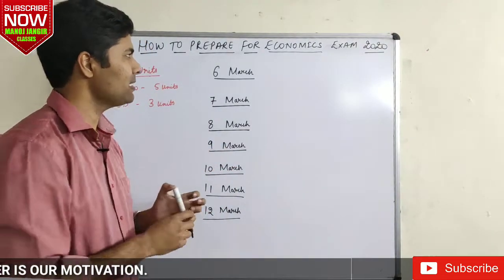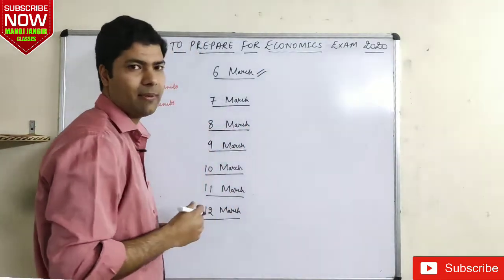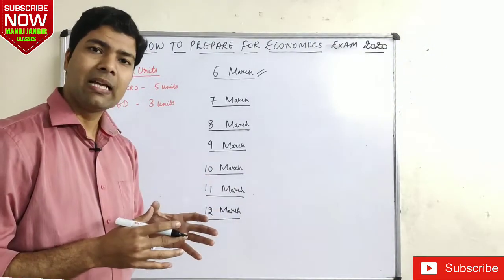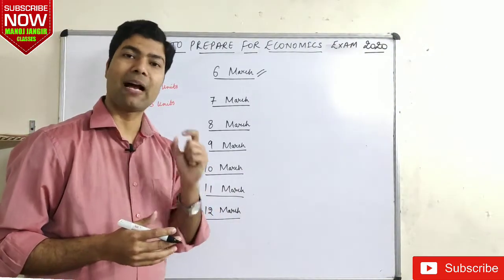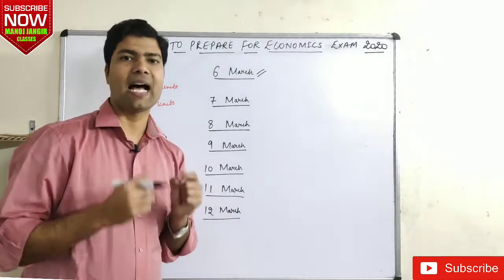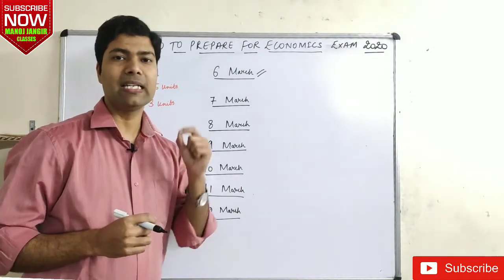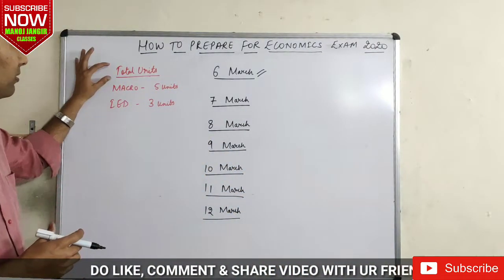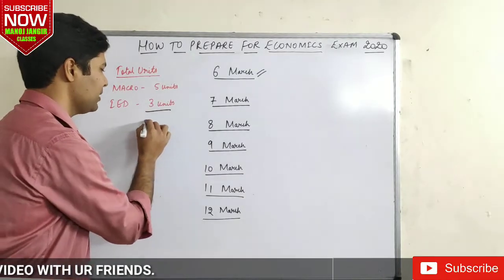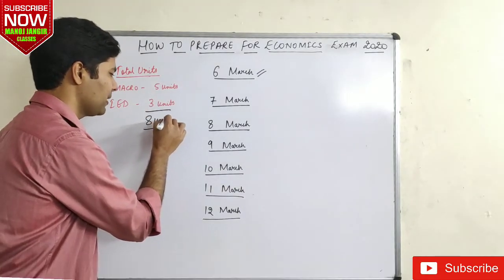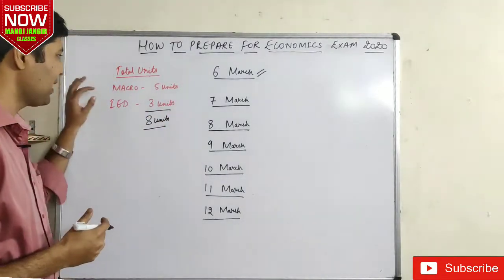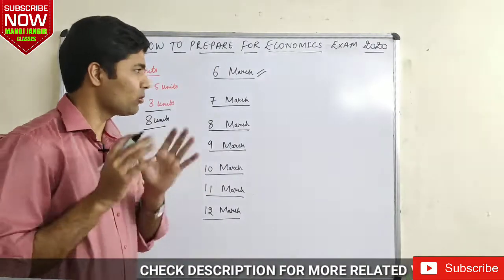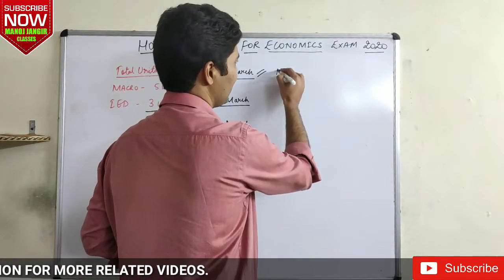Let me talk about the small units of macroeconomics. There are 2 units at the end that are very small. In total, economics has 8 units — 5 units are in macroeconomics and 3 units are in Indian Economic Development. So first of all, you can start with money and banking.